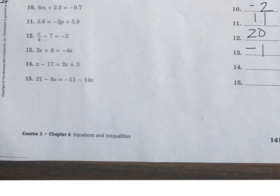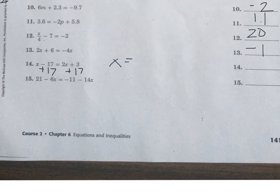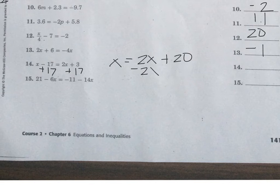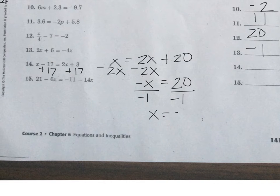For problem 14, get the x's together and the non-variable numbers together. Add 17 to one side, giving x equals 2x plus 20. Then subtract 2x, so negative x equals 20. Divide by negative 1 to make x positive, and x equals negative 20.